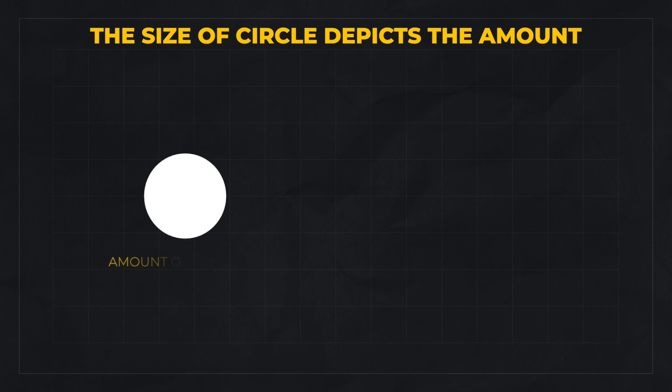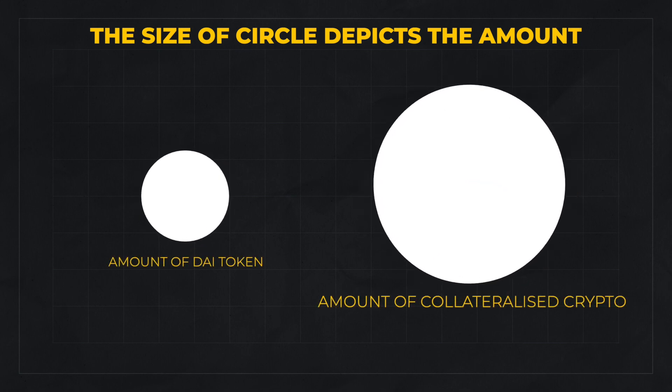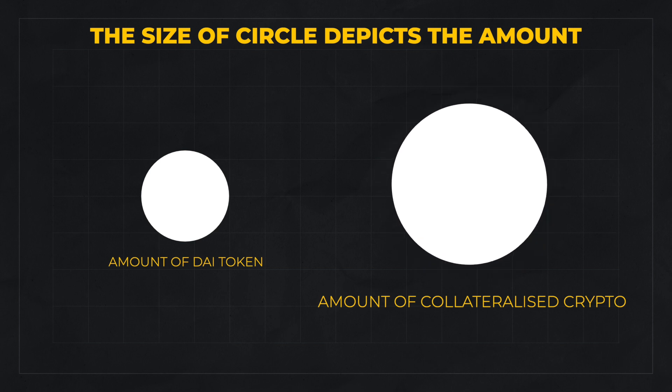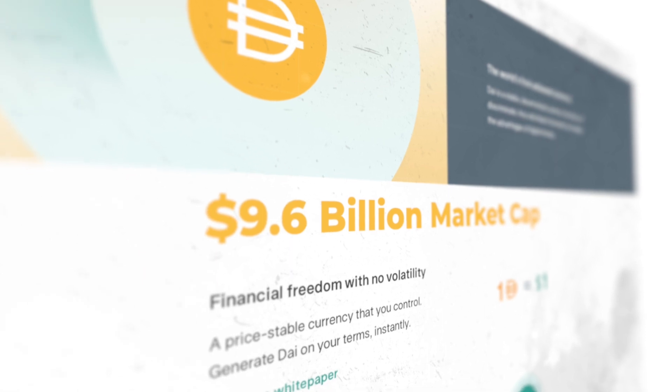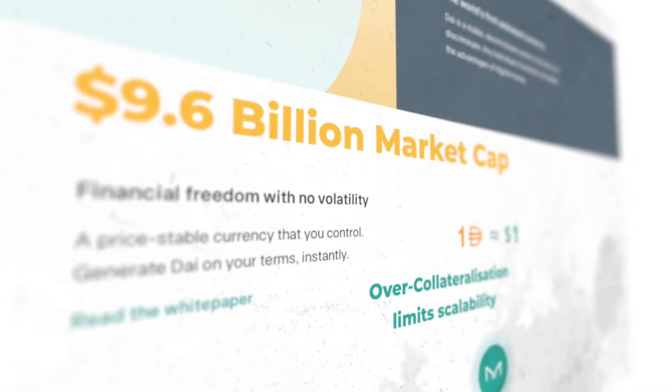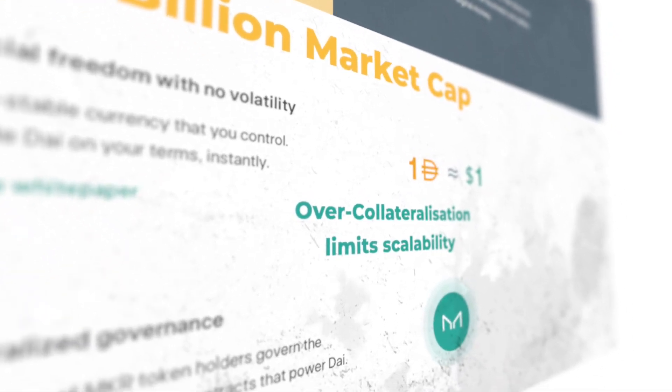You might ask: Bitcoin, Ethereum, and Compound are themselves so volatile — how is DAI always stable and equal to $1? This is because for every DAI, there is more than $1 worth of cryptocurrencies kept as reserve. So even if the value of these cryptocurrencies fluctuates, DAI remains stable. DAI has a market cap of $9.6 billion. But because of this over-collateralization, it has scalability issues — and that is the reason why UST, or TerraUSD, was introduced.